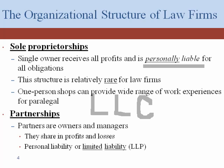Let's talk about the next choice: partnership. There are actually two categories of partnerships. The first one is called a general partnership. It's very similar to a sole proprietorship, except there's more than one owner — that's the big distinction.